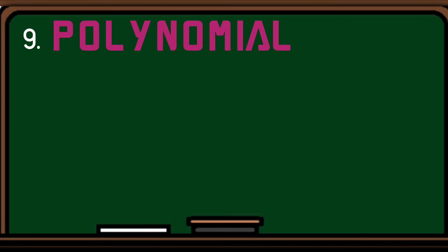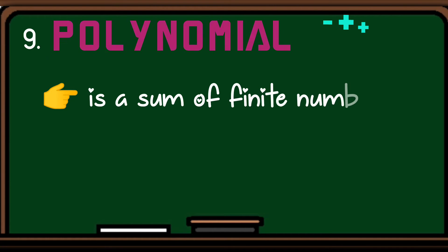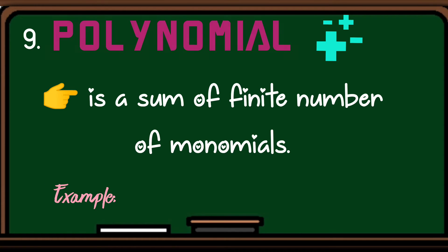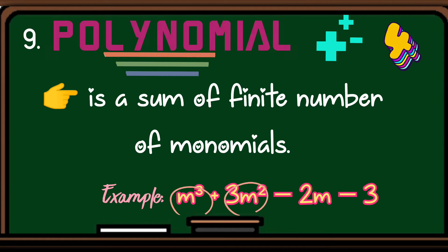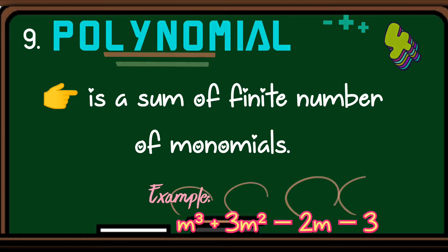Number nine, polynomial. A polynomial is a sum of finite numbers of monomials. Example, mq plus 3m squared minus 2m minus 3. So, kaya siya tinawag na polynomial because apat na terms ang meron. So, mq, positive 3m squared, negative 2m, negative 3.